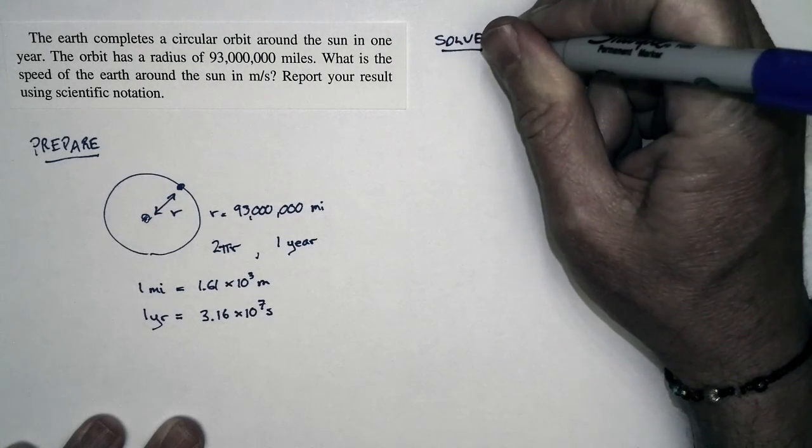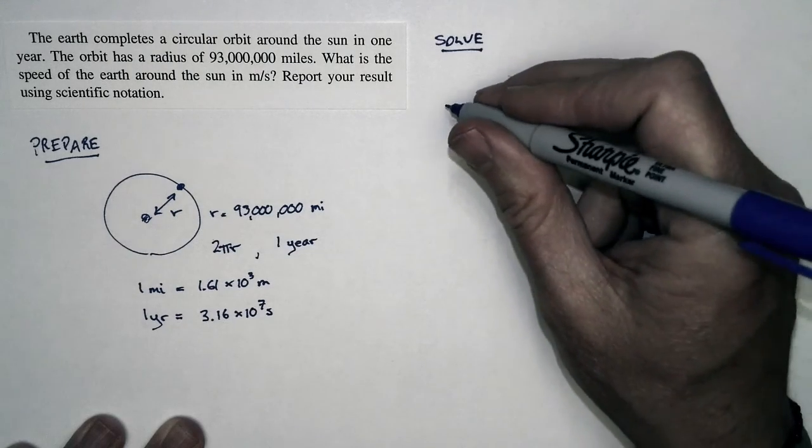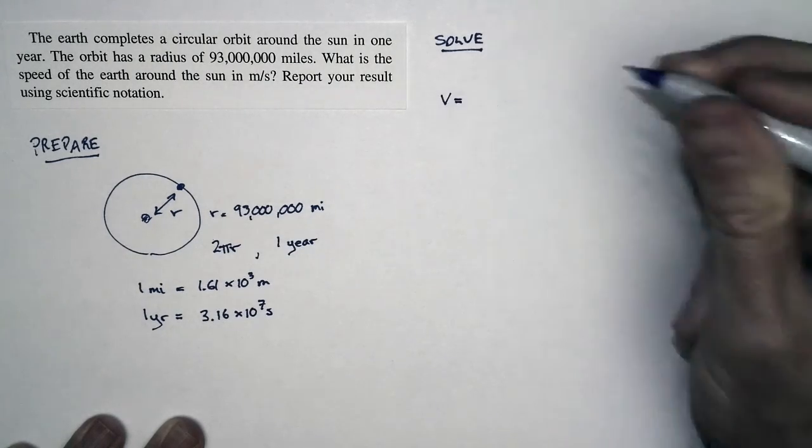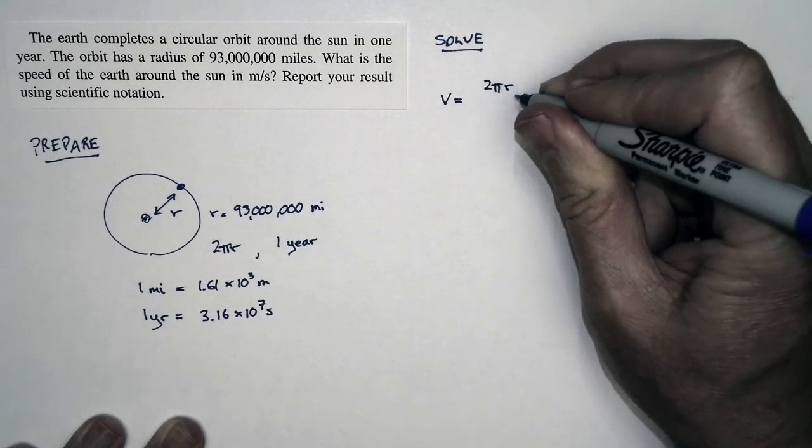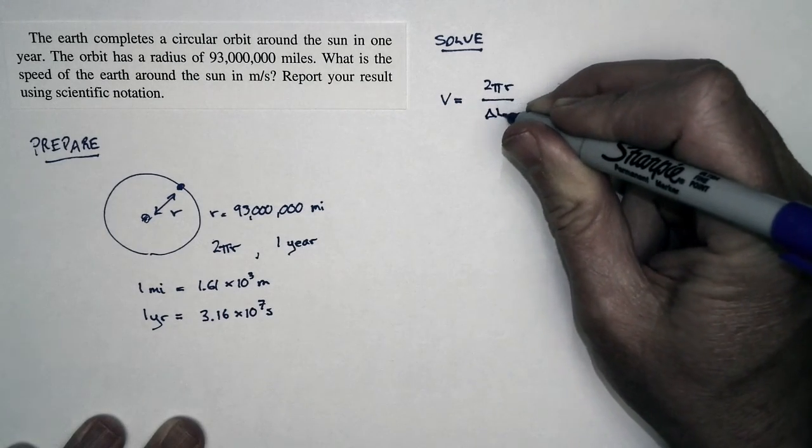Here's our solution. We'll start with the speed, which is just 2πr divided by the time interval.